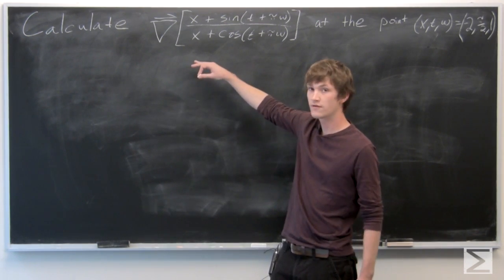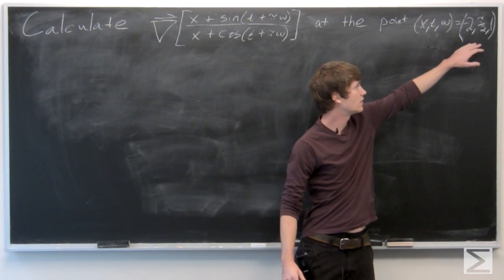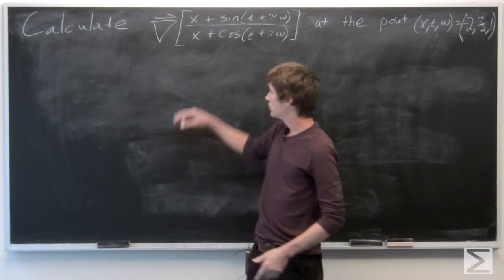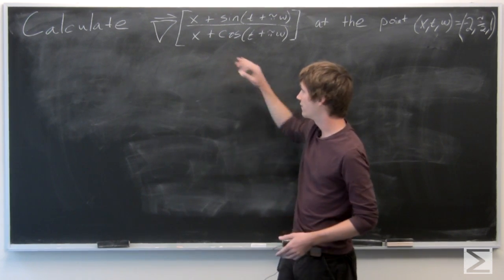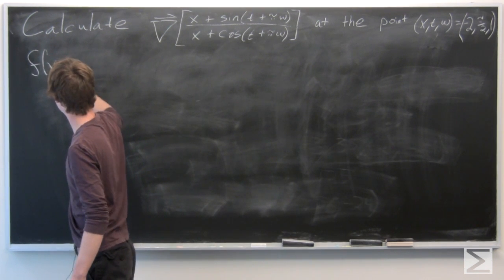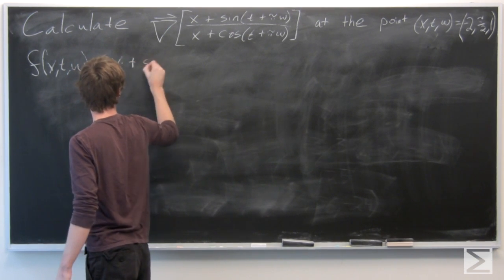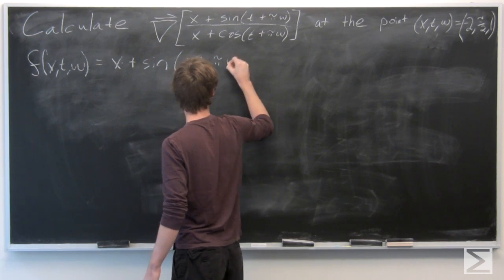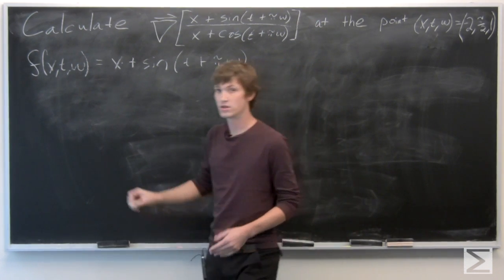In this problem we're asked to calculate the gradient vector of a function at the point (x, t, ω) equals (-2, π/2, 1). To simplify, we're going to let the numerator equal function f of (x, t, ω), and we're going to do the same with the denominator, letting that be g of (x, t, ω).